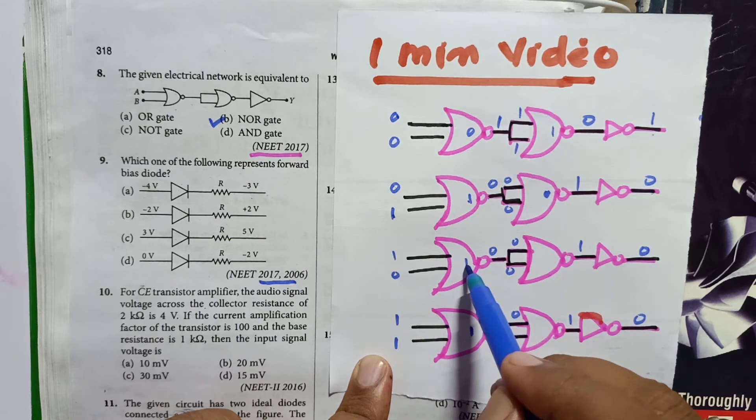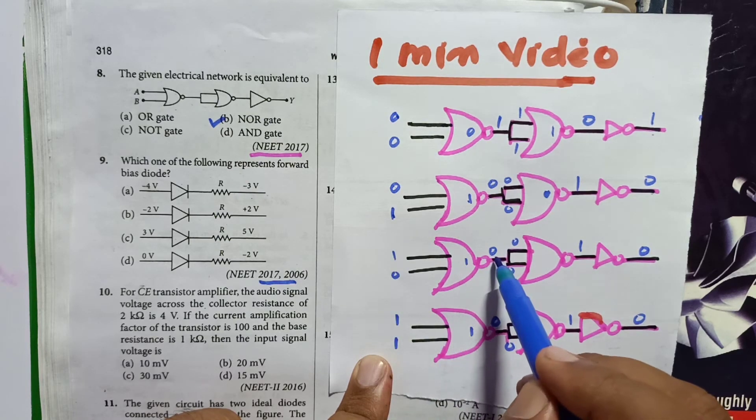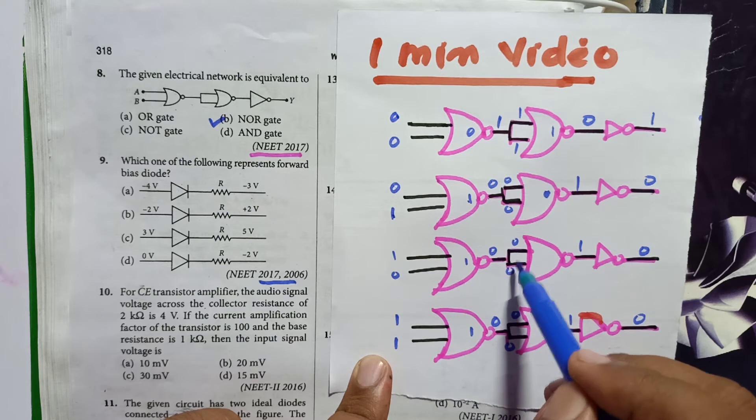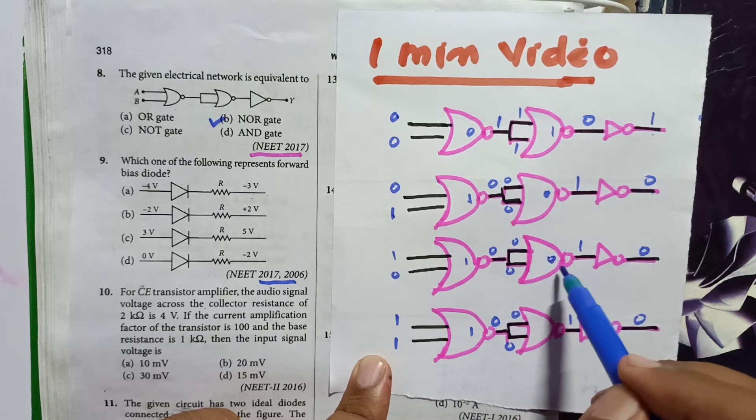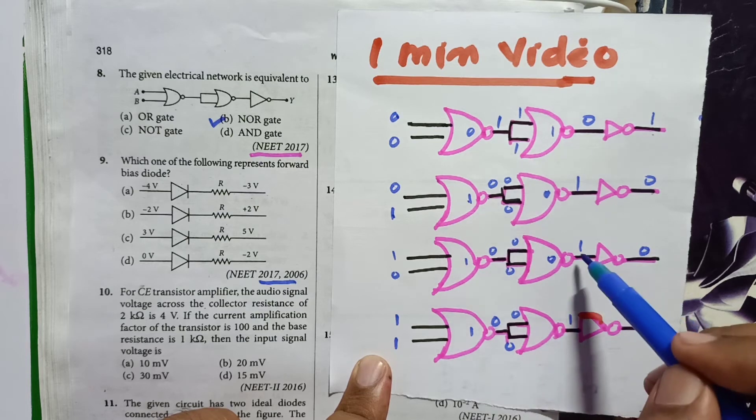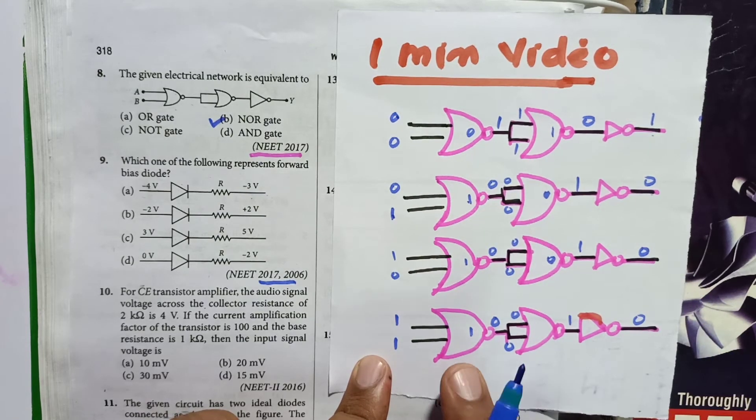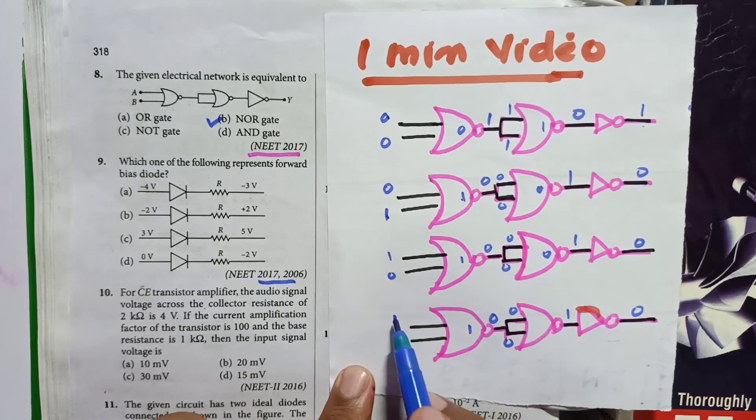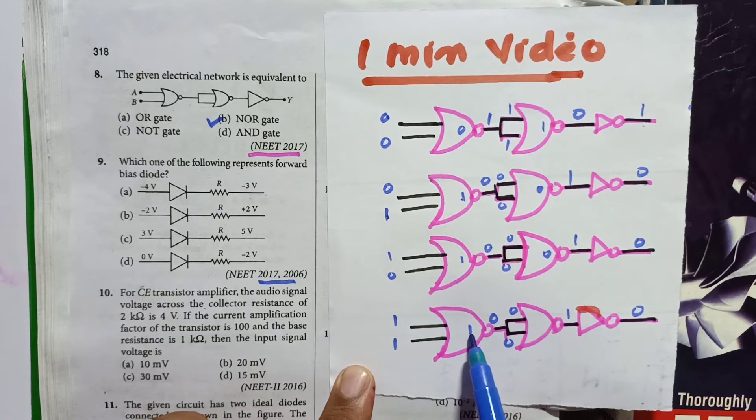So 1, 0 means 1 plus 0 is 1 here, after crossing the bubble it will become 0. So 0, these two terminals are same, so 0, 0 and 0 plus 0 is 0, after crossing the bubble it is going to be 1 here and this 1 is going to become 0 here. So now you just see this last one. So 1, 1, so 1 plus 1 is 1 here, after crossing the bubble it is becoming 0.